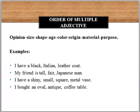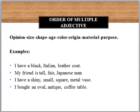Another example: I have a shiny, small, square metal base. 'Base' is the noun. I have four adjectives following the sequence: 'shiny' under opinion, 'small' under size, 'square' under shape, and 'metal' under material. Also: I bought an old antique coffee table. I have three adjectives following the sequence — 'old' under age, 'antique' under opinion, and 'coffee' showing purpose or material. This is the order for using multiple adjectives.